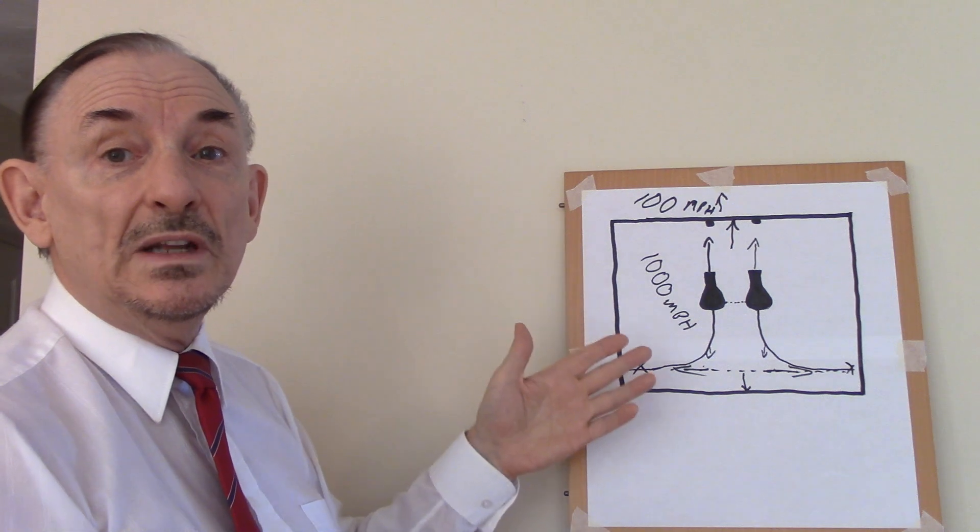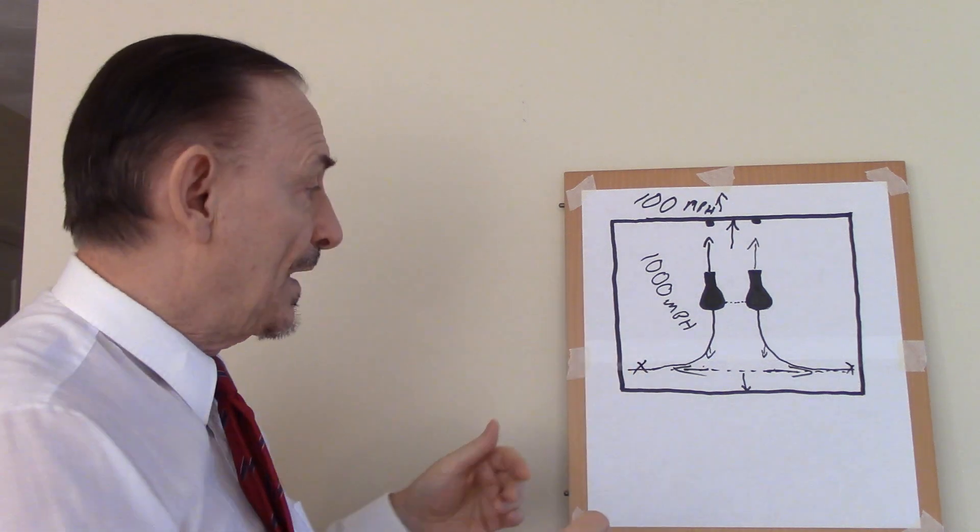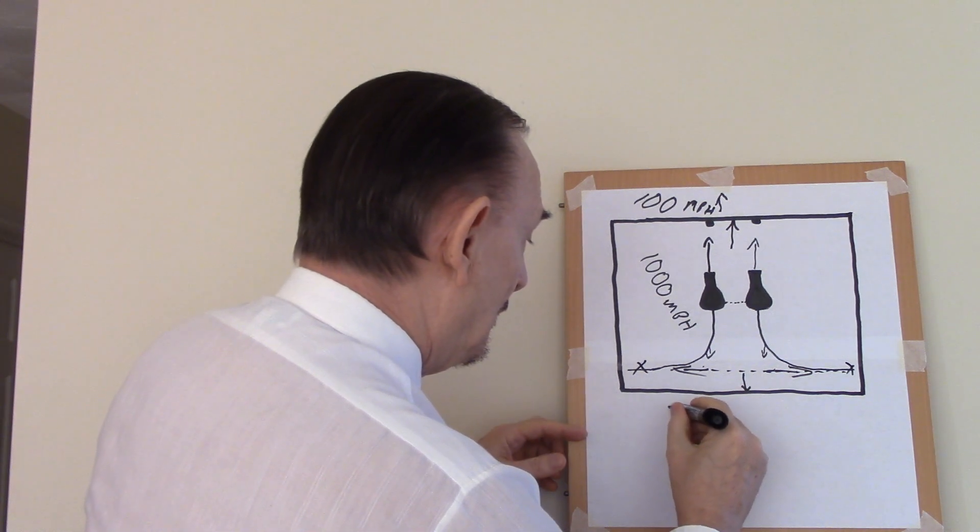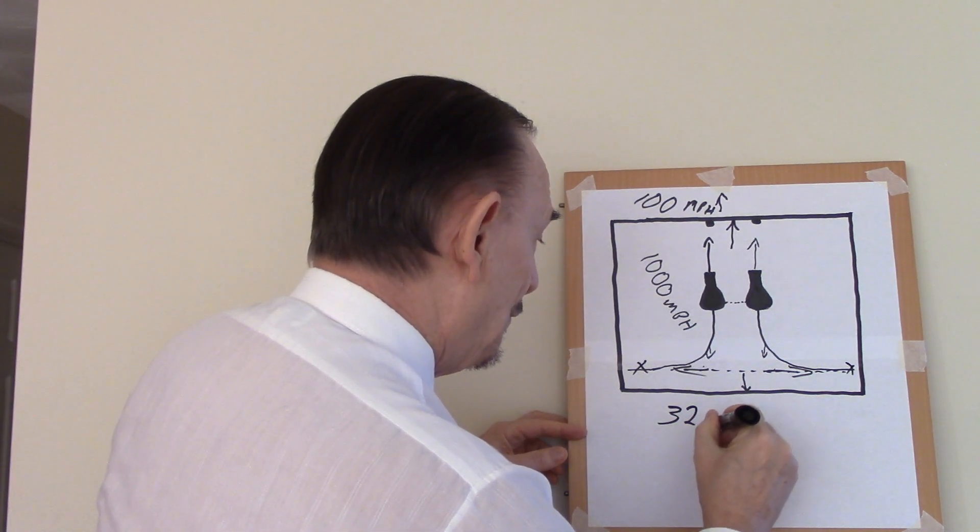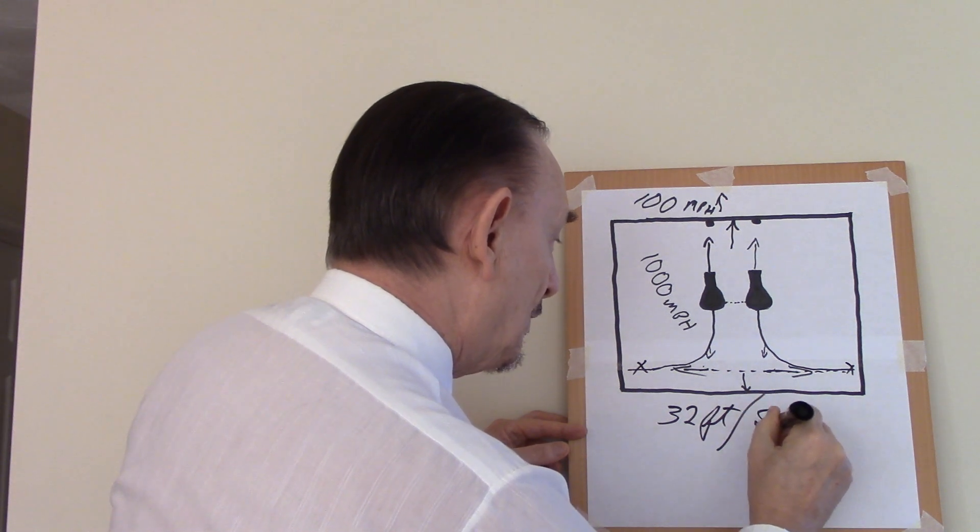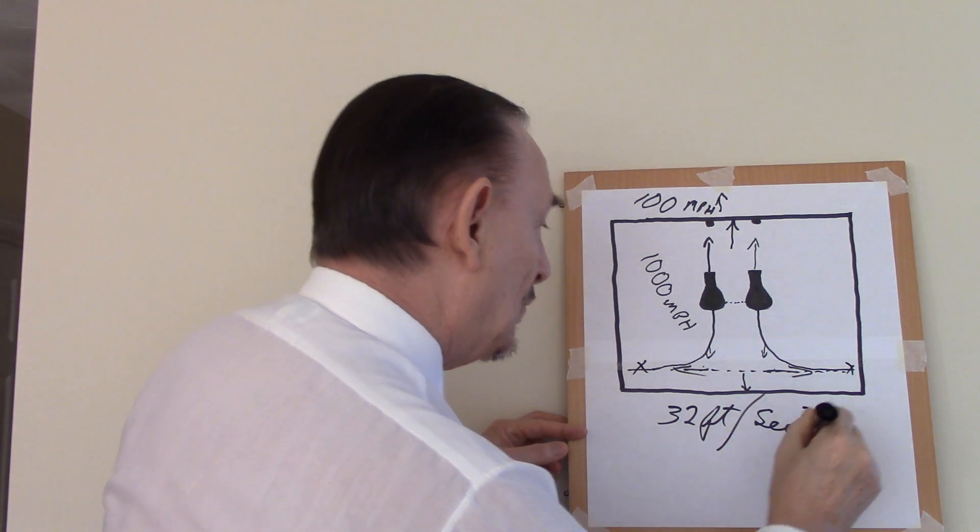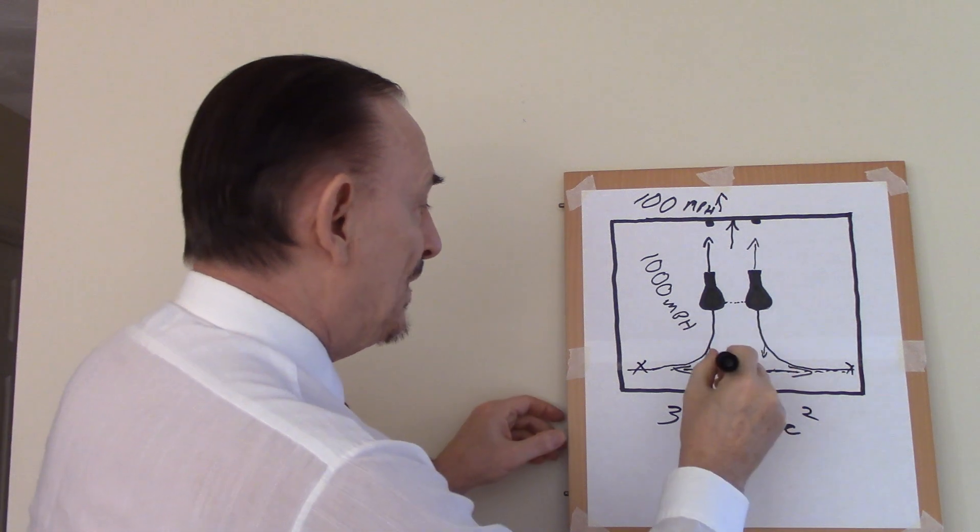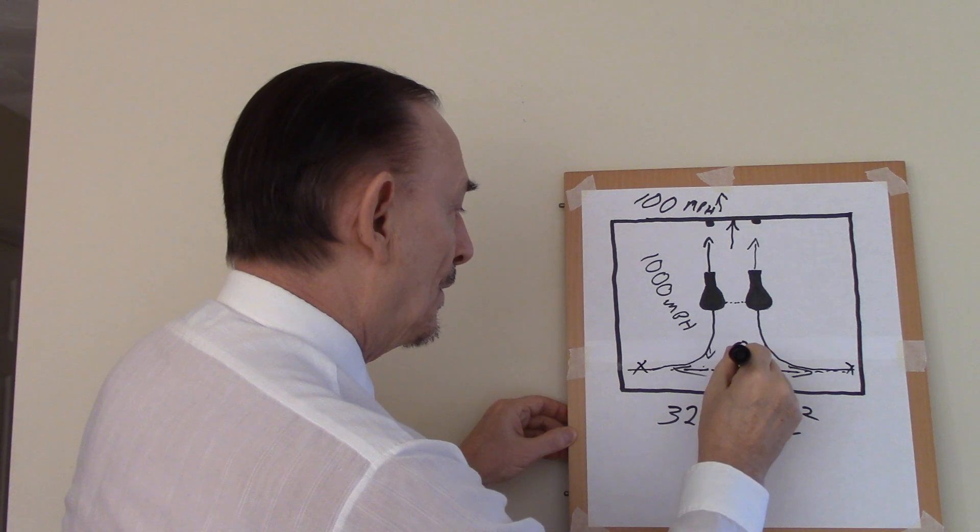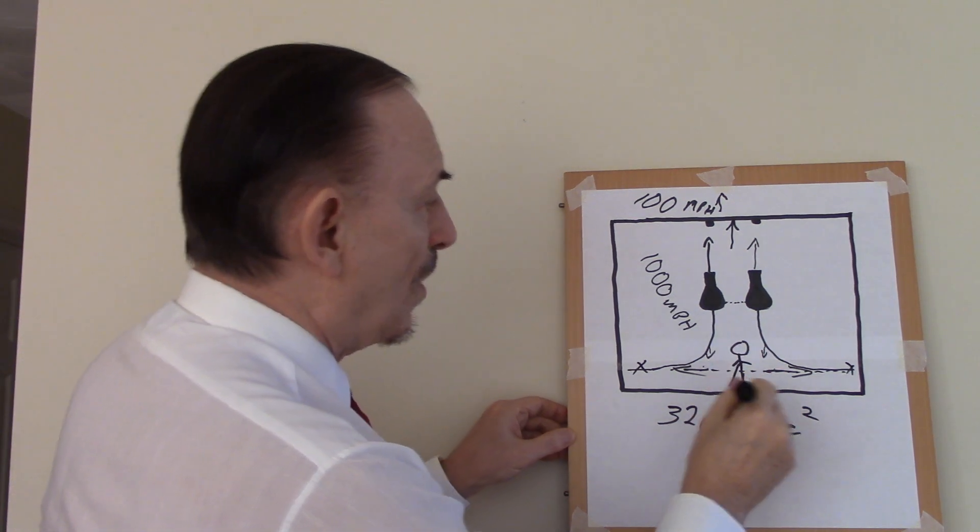Now, of course, if we accelerate at 32 feet per second squared, you will be able to stand on this wall.